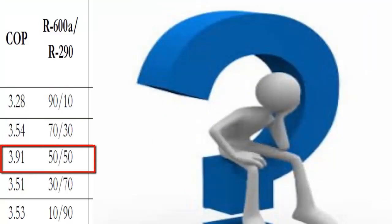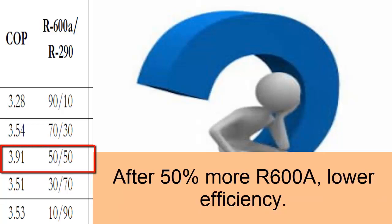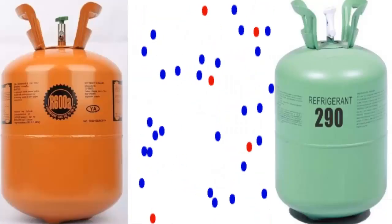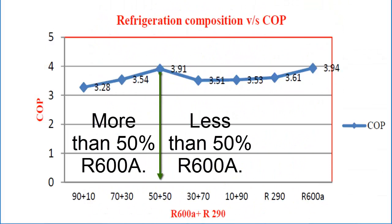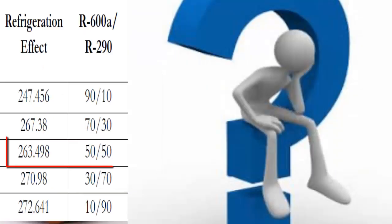After a proportion of more than 50% of R600A, as the amount of R600A refrigerant in the mixture increases, the coefficient of performance of the system — COP — decreases, meaning the system becomes less efficient. On the screen we have different performance values for some mixtures between R600A and R290.